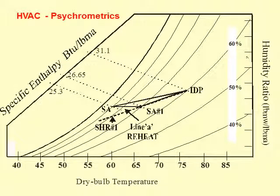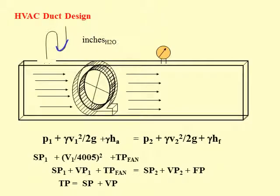For the HVAC section, we'll take the psychrometric chart to a new level and show how it can size systems and define components. We'll cover everything that's needed, even duct design.